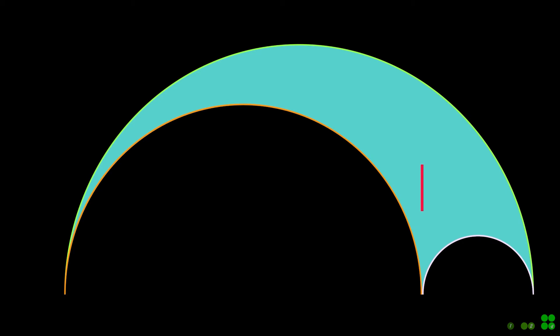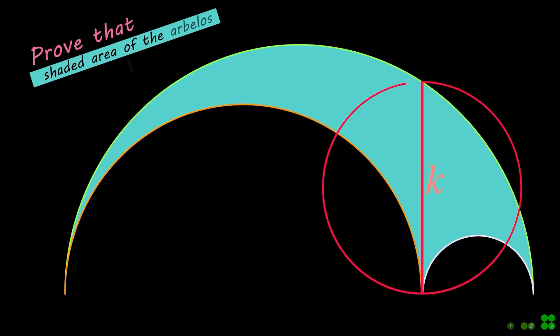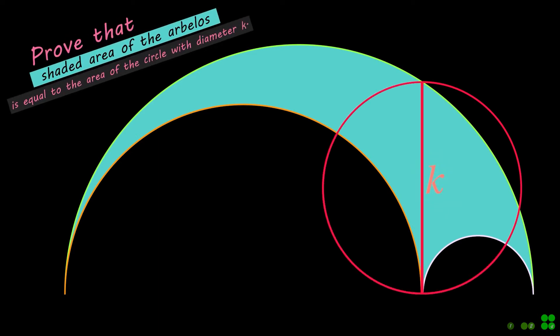Let's look at the question related to the area of the Arbelos. Prove that the shaded area of the Arbelos is equal to the area of the red circle with diameter K, as shown.